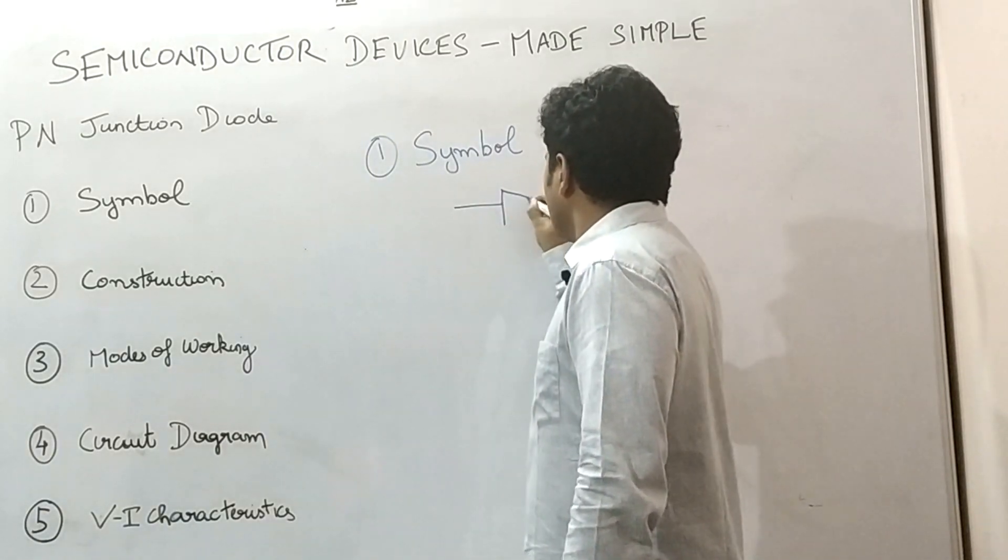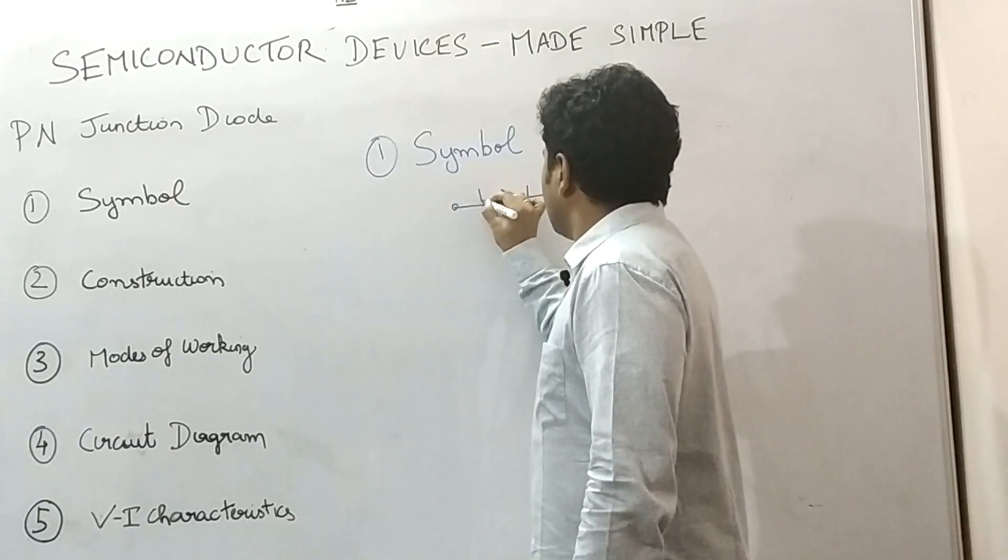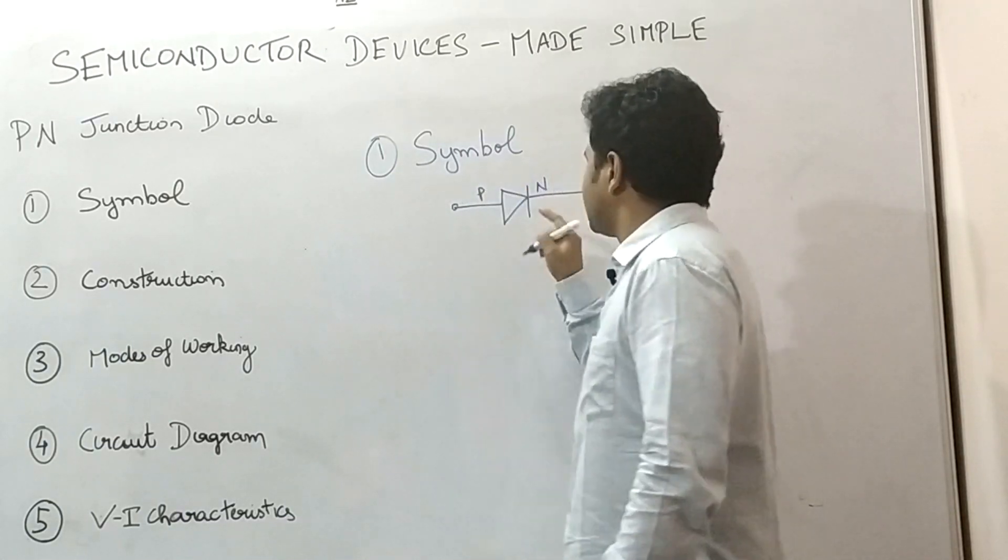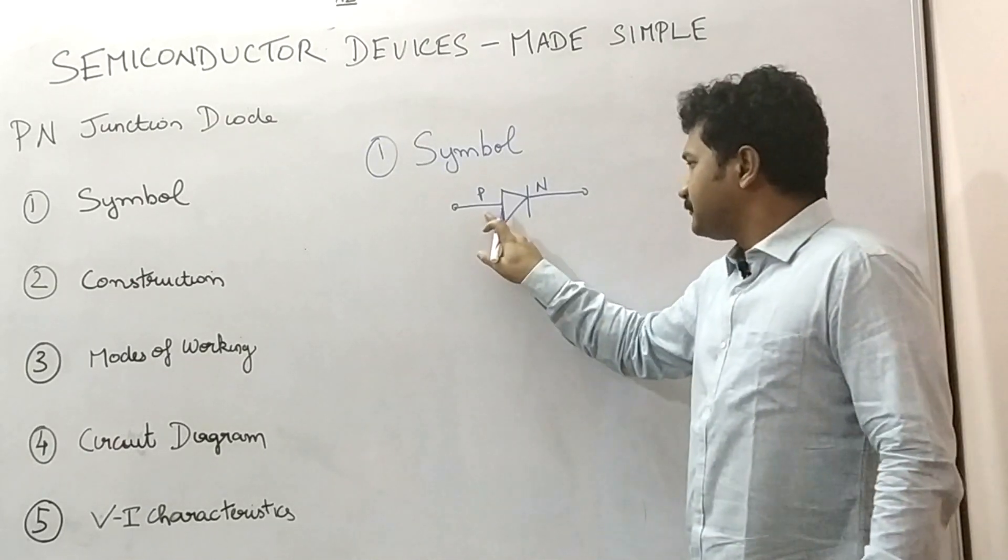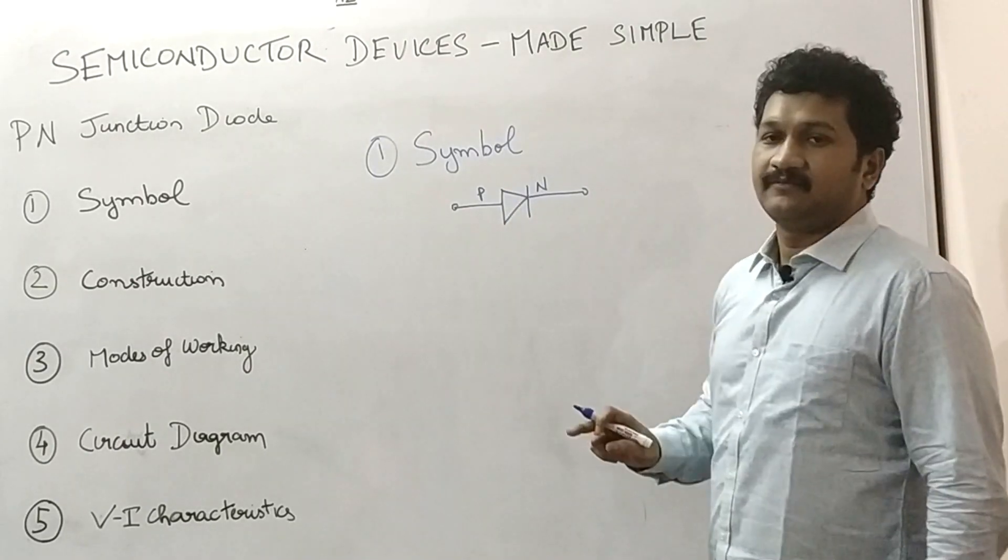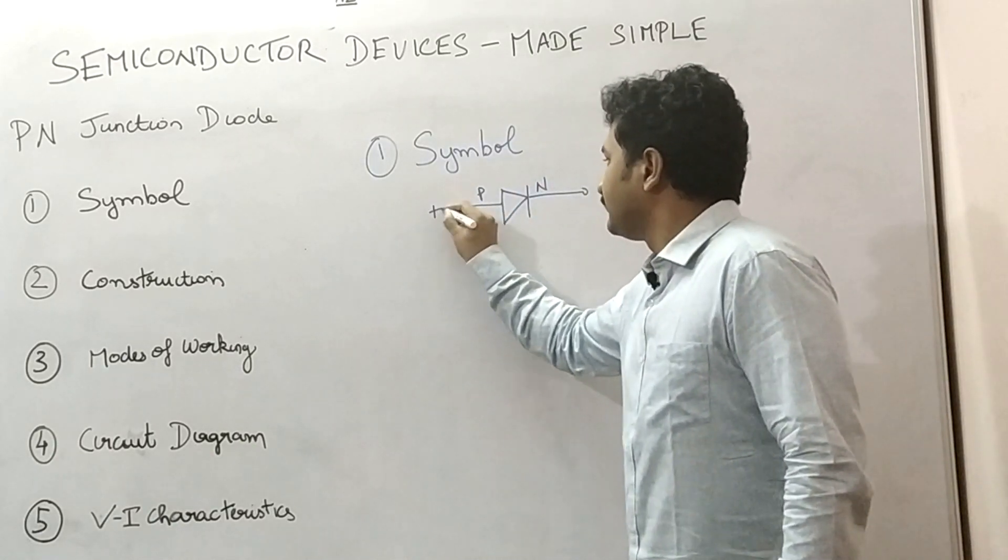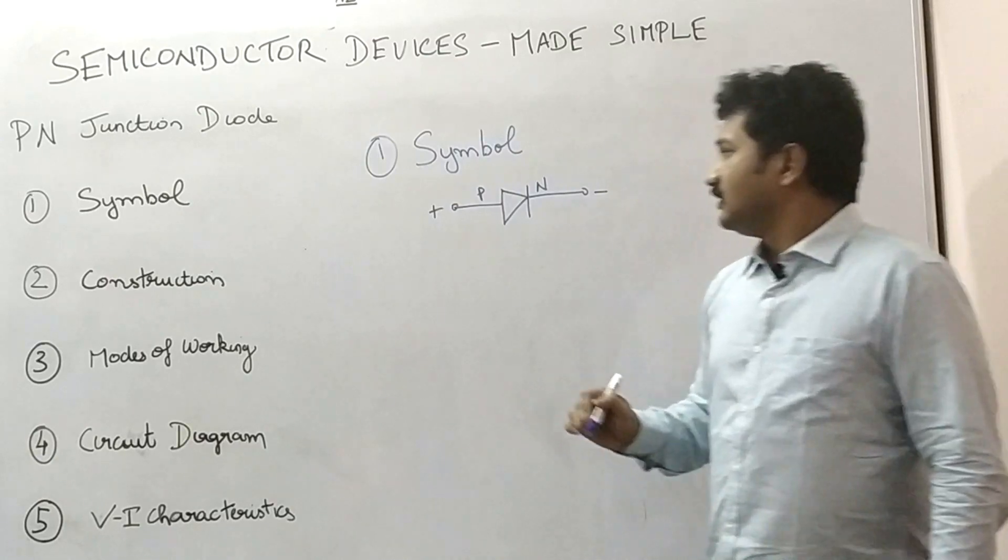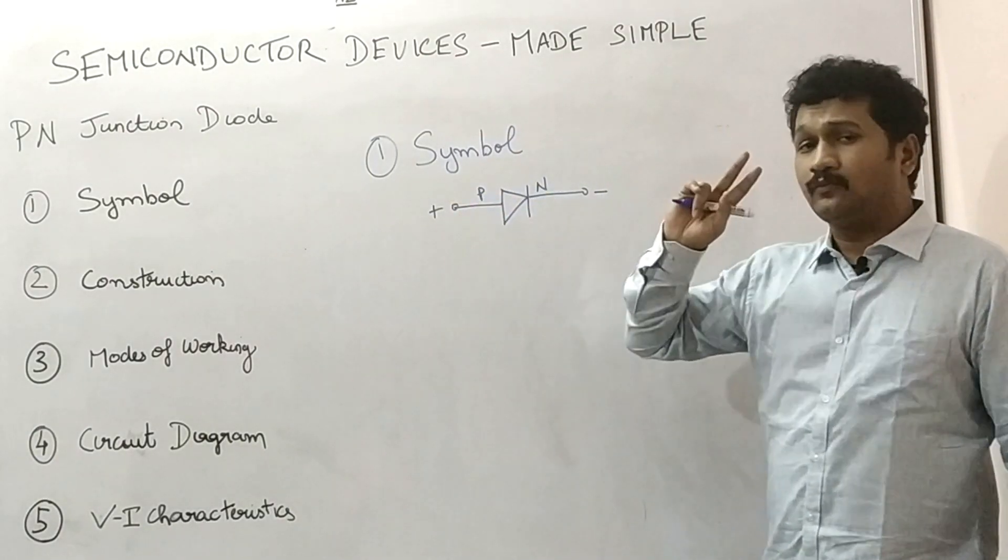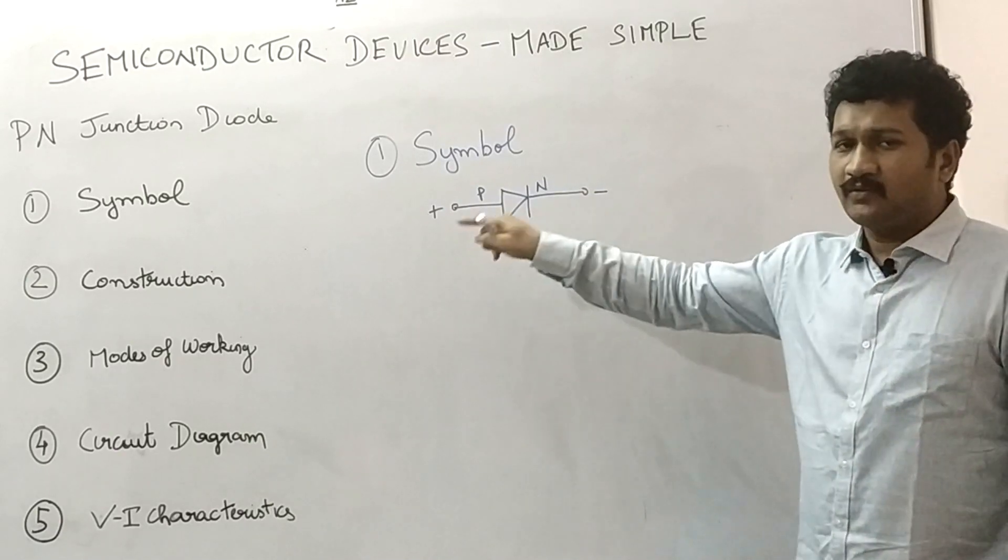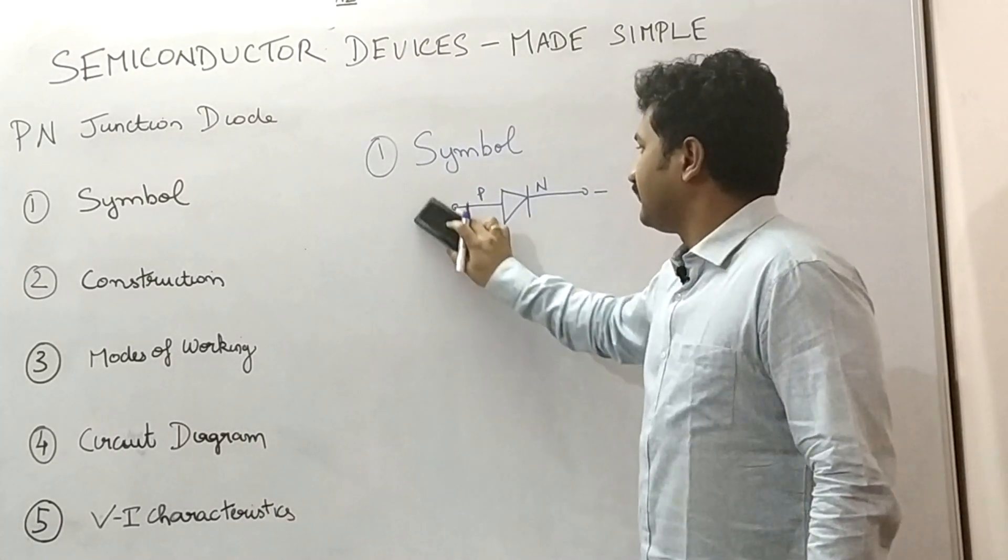When going to symbol, this is the symbol of PN junction diode. This is P region and this is N region. This is positive terminal and this is negative terminal. This can be given in the reverse pattern for two modes, two main modes: forward bias mode and reverse bias mode. That we will discuss in further discussions.